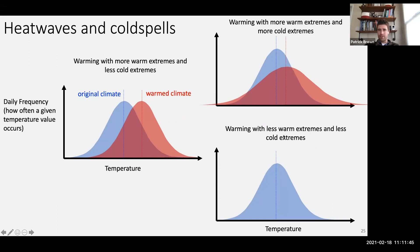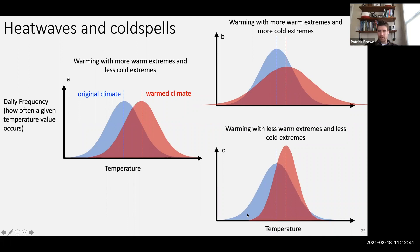What does it look like if you have warming in the average but theoretically less extremes in both cases? Instead of flattening out, it's going to be more narrow. So it's theoretically possible to have a warmer climate — a warmer average temperature — and have less cold extremes and less warm extremes. Because there's a finite number of days, you would have more days right near the average.